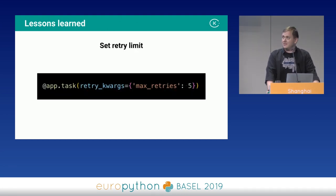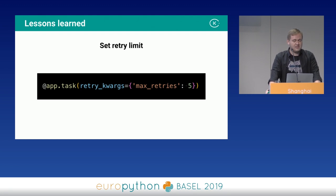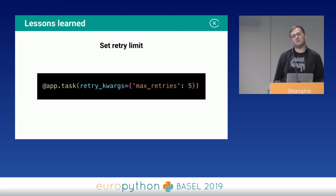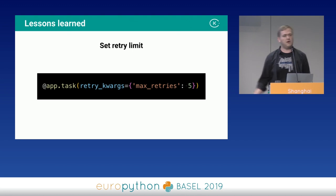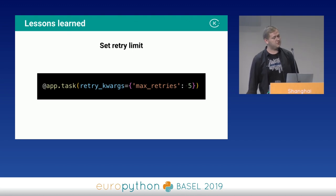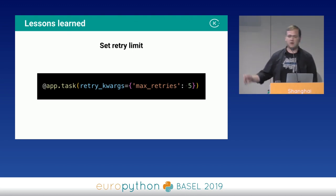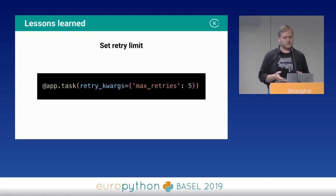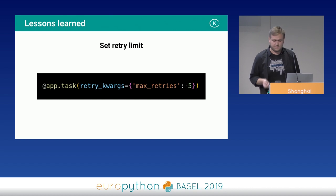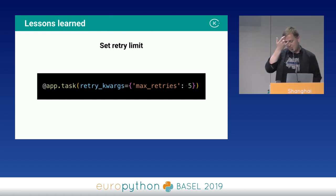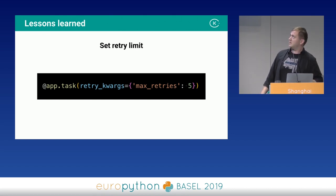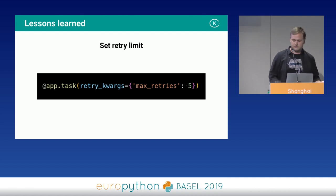This comes together with setting a retry limit. It tells Celery how many times to retry the task, then raise an exception and handle it yourself. It's easy — it's in the decorator itself, just set max_retries and you're good to go.